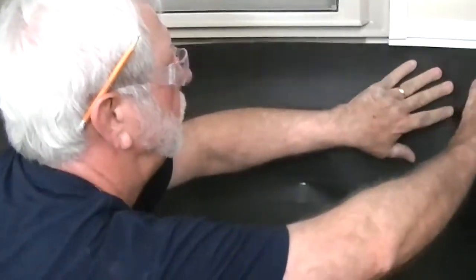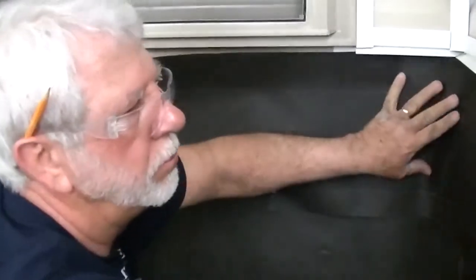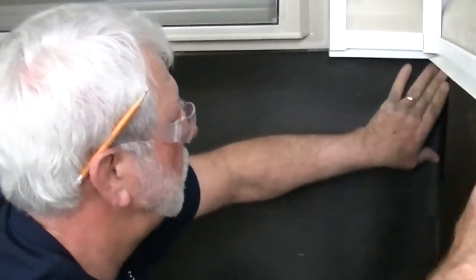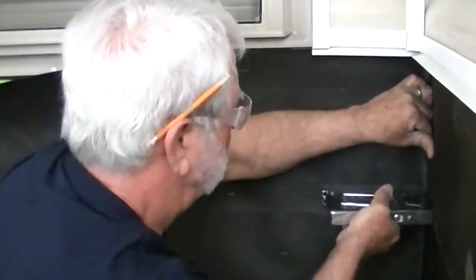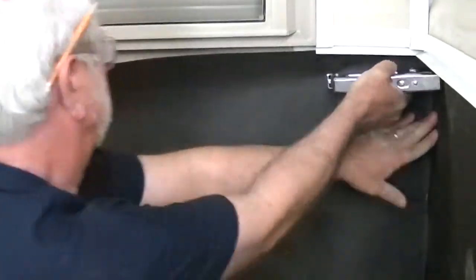Any flashing used on a project should be carefully designed and installed so that water is directed away from the structure. Flashing improperly installed can actually funnel water into a building, so utmost care is important.